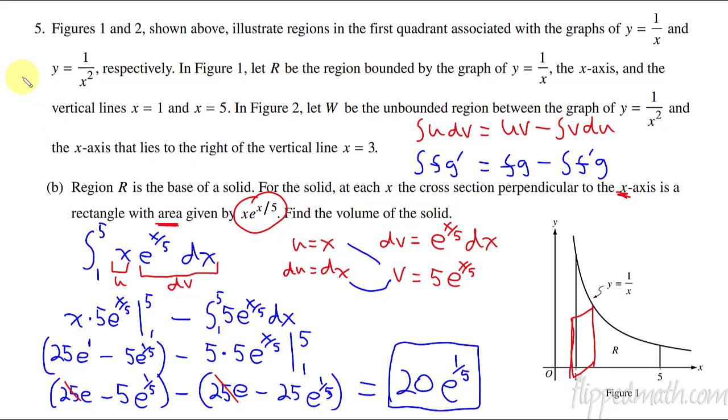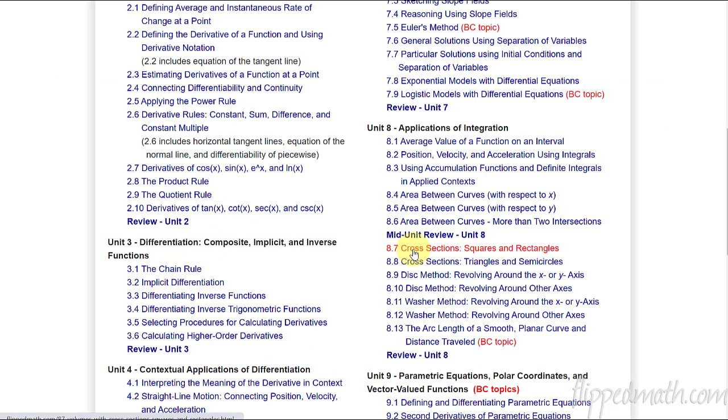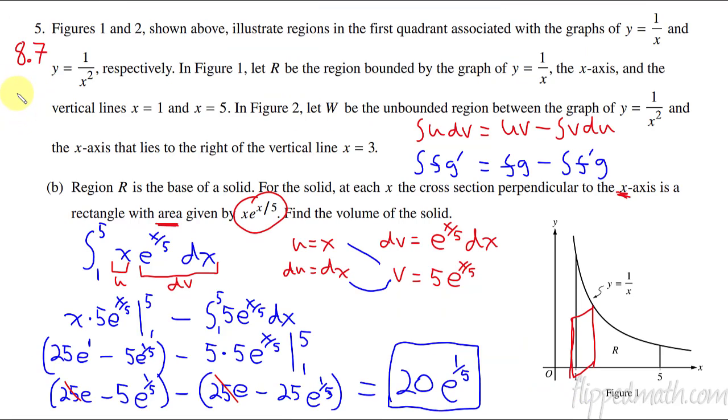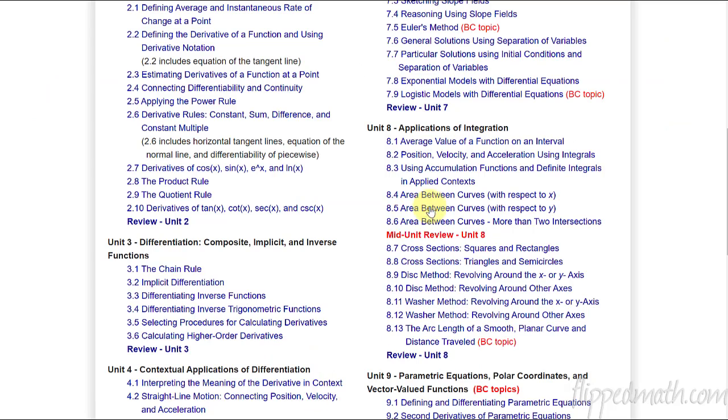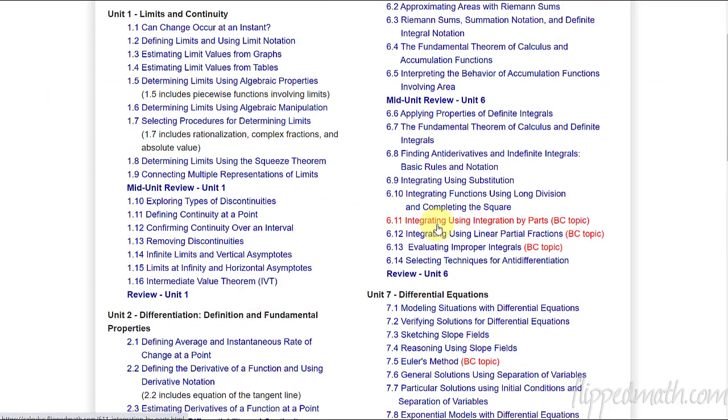You had some integration by parts. That was probably one of the more challenging parts of this thing. What was this from? Two lessons. 8.7, you had to be able to recognize 8.7 for the base of a solid. We're doing cross sections where we have squares and rectangles. But another part for part B was the integration by parts, and that was 6.11. You look right here, 6.11 integration using integration by parts.